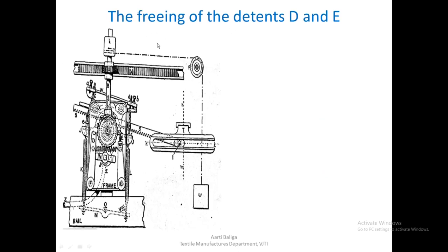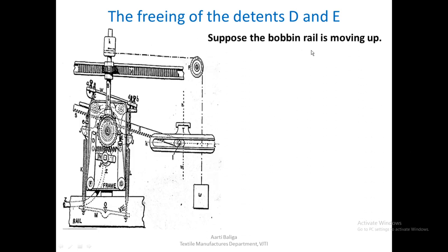How does the freeing of detents D and E take place? We have already mentioned that only when both detents are not in position to hold the ratchet and prevent it from rotating will the ratchet turn for a few teeth. Otherwise, all the while they are held alternately by either D or E.